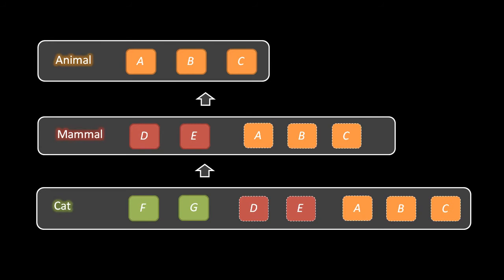If our language didn't have any kind of automatic inheritance mechanism, then to get the same effect we would have to explicitly define the members A, B, and C in all three classes, and the members D and E in both Mammal and Cat. Doing this would not only be bothersome but potentially error-prone if we want to make sure that the definitions across the classes stay exactly the same.